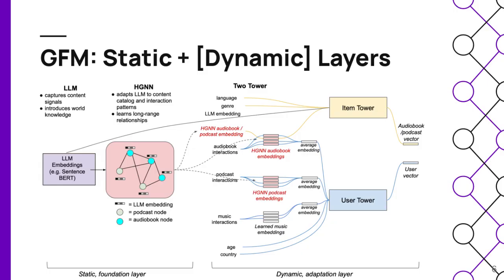The answer is yes, in the sense that we make a first iteration on this question, designing what a foundation model for personalization should look like. The first static layer is a combination of a heterogeneous graph neural network, which uses large language model embeddings as a content-based representation. The representation coming out from this static layer is then used in a dynamic layer, which is our unified model that will be able to perform different downstream tasks — in this case, recommendations of either audiobooks or podcasts, so different content types.